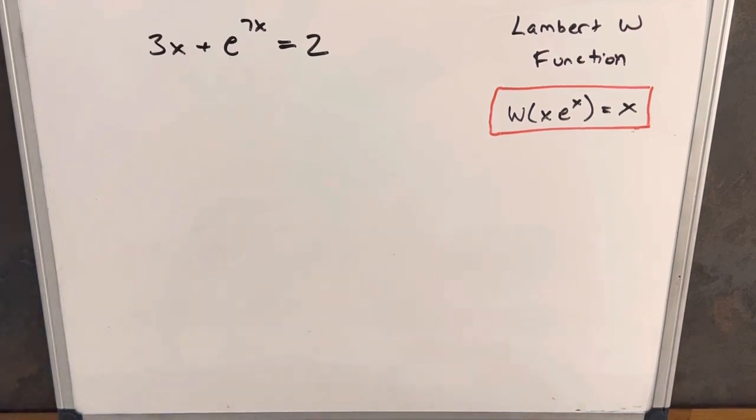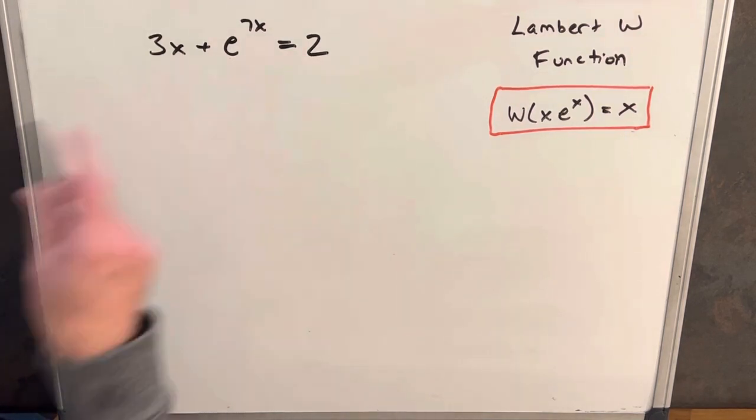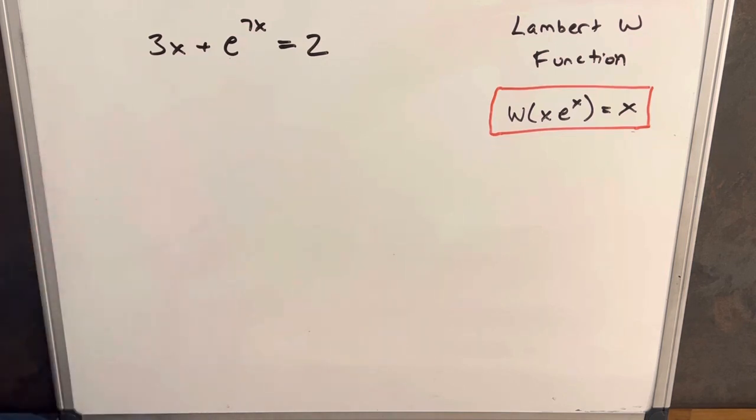Hey, we have on the board today this interesting looking exponential equation. I thought this would be a good one. This is a little different than some of the others that we did in the Lambert W function playlist. The difference, I think, is this plus sign because the other ones we've been multiplying and then it made it a little easier. I think the addition there is going to make it harder to work with.